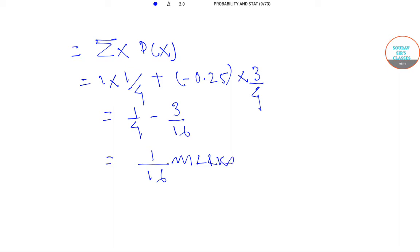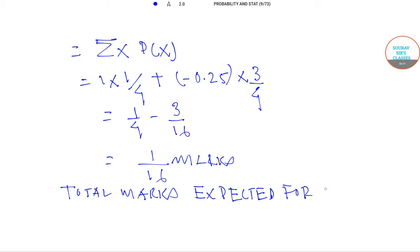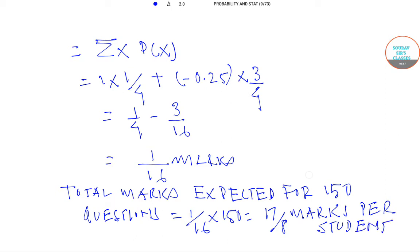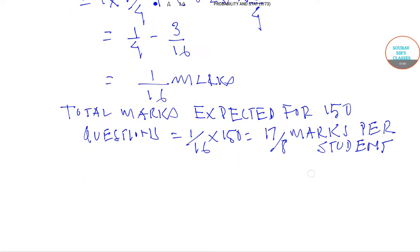Total marks expected for 150 questions per student: (1/16) × 150 = 150/16 = 75/8 marks per student. Total expected marks for 1,000 students will be 1,000 × (75/8).